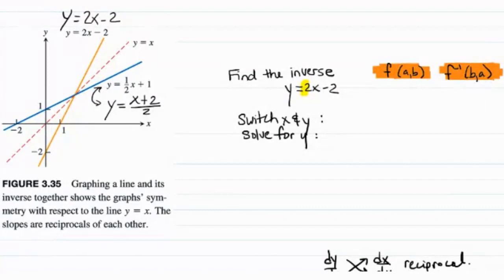For example, on the graphs we have here, y equals 2x minus 2 goes through the point 0, negative 2. And the blue graph, y equals 1 half x plus 1, or y equals x plus 2 divided by 2, goes through the point negative 2, 0. So for each point on one graph, the other point is flipped around. The x and y are switched.